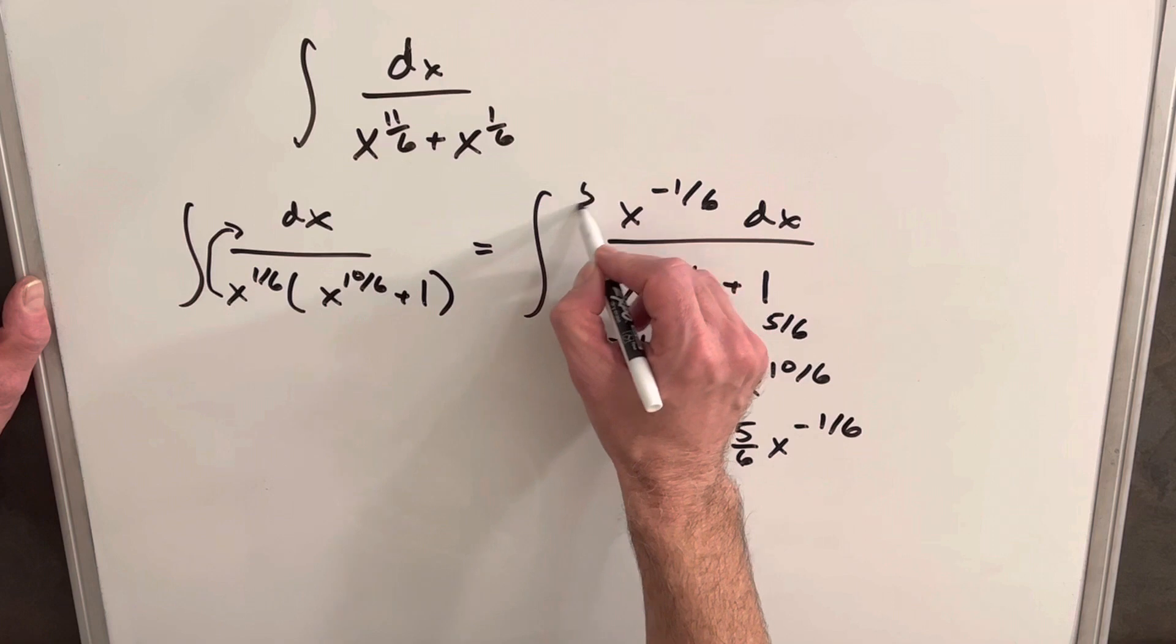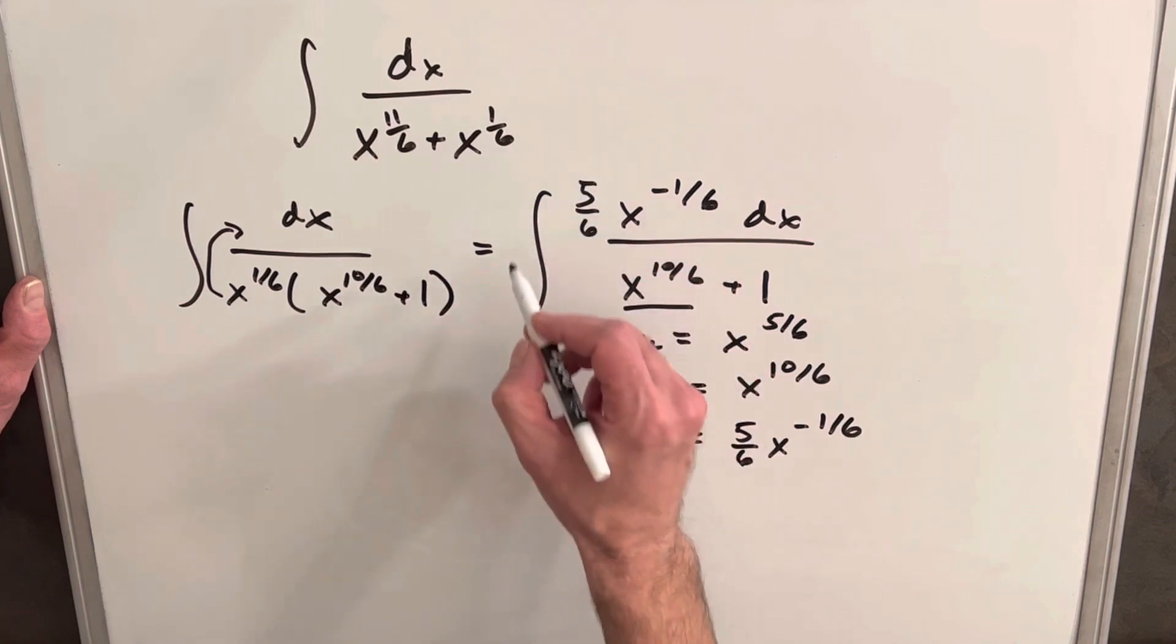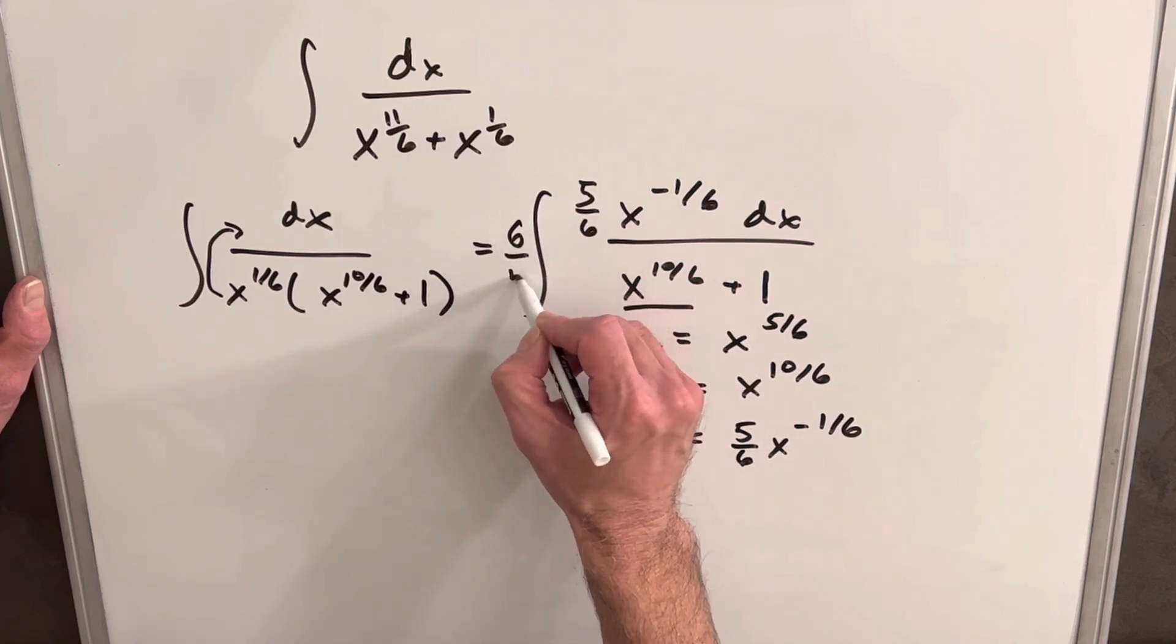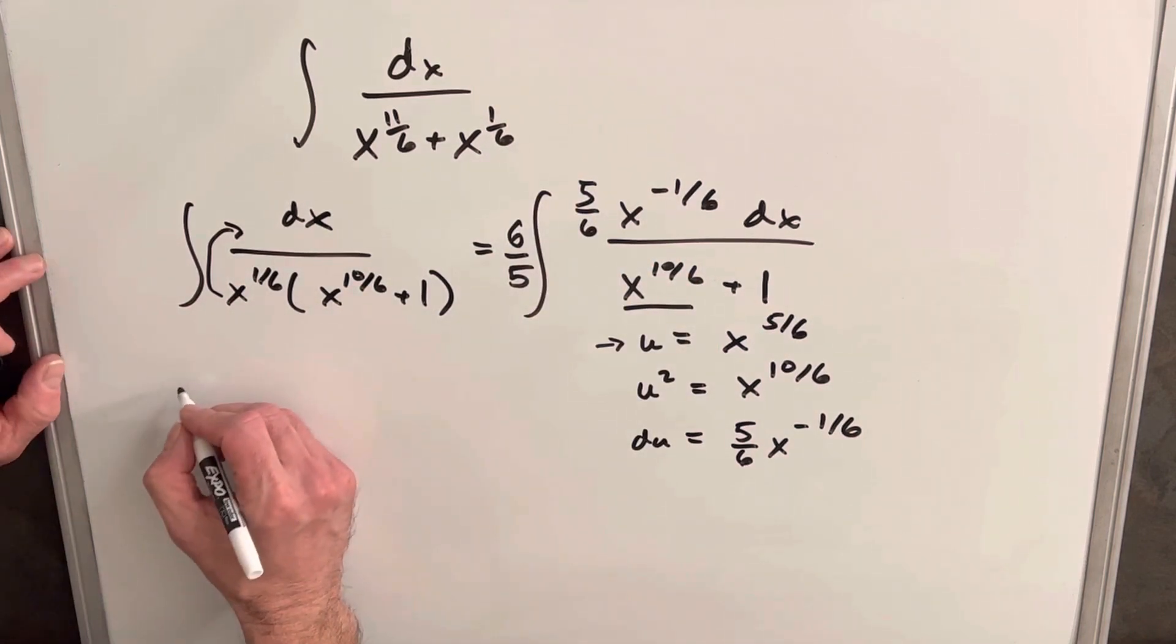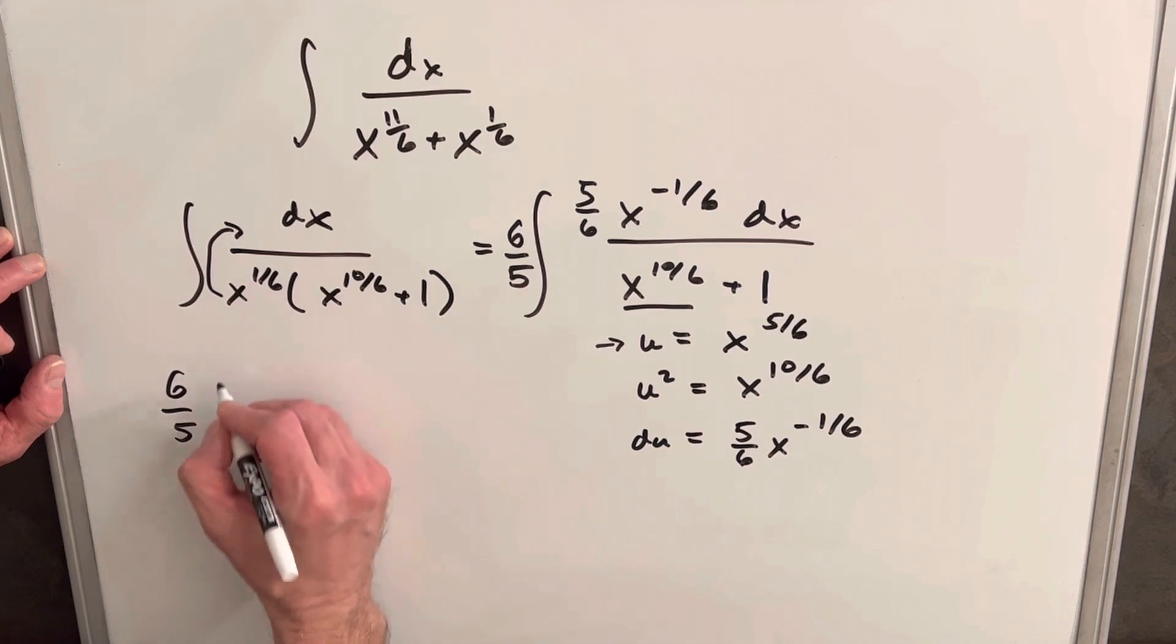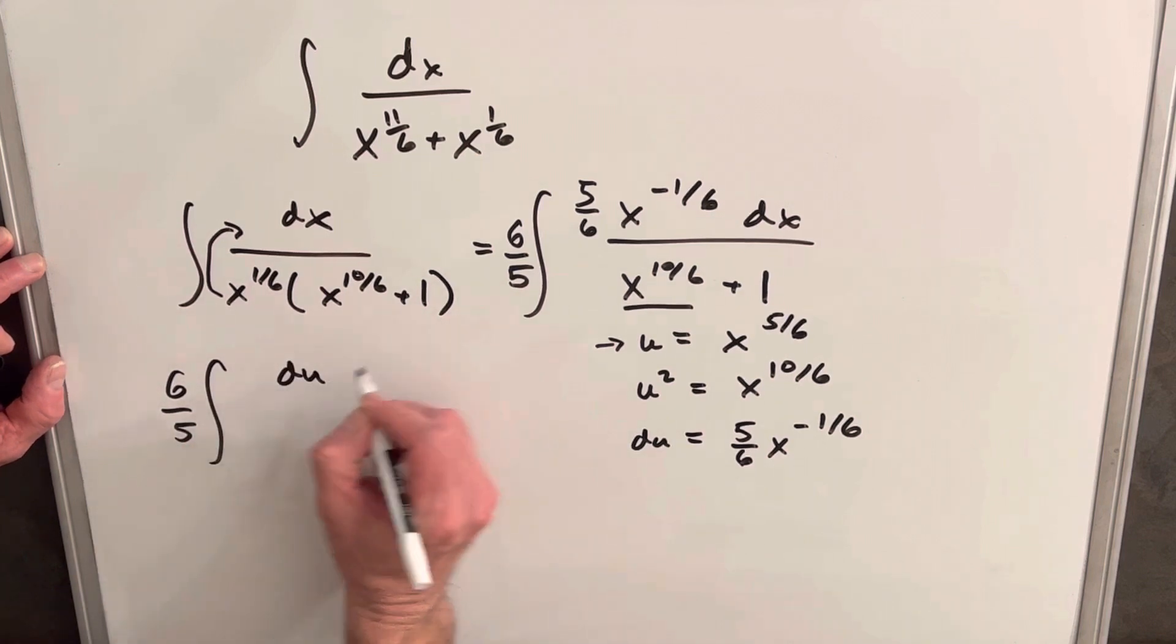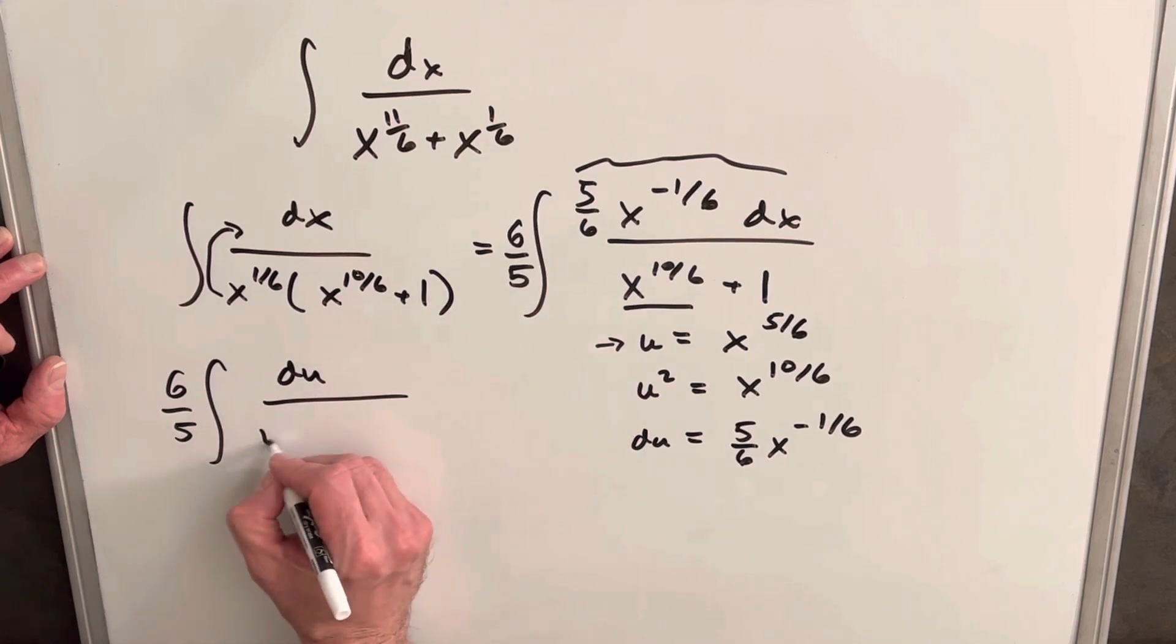Just need to create, what I'll do is I'll create a 5 over 6, but then I'll multiply by 6 over 5 up front. So I'm just multiplying by 1 there. So then let's make our substitution. We'll have our 6 over 5 du. Our whole numerator is du over u squared plus 1.